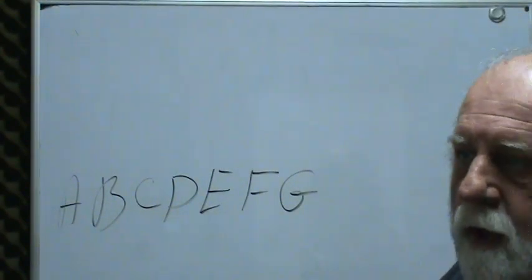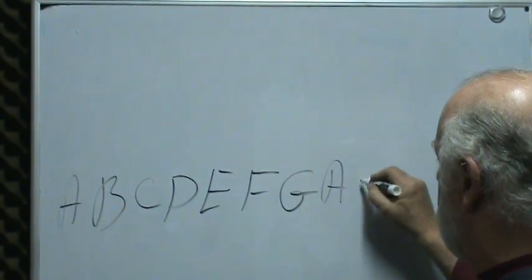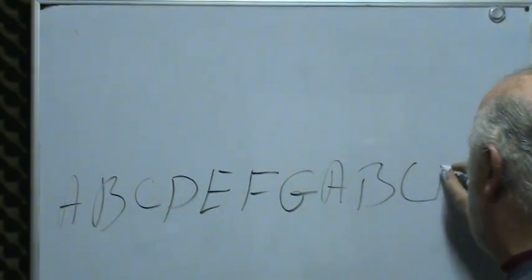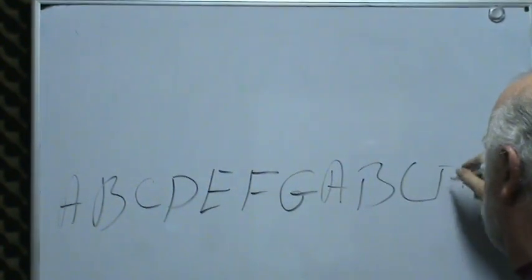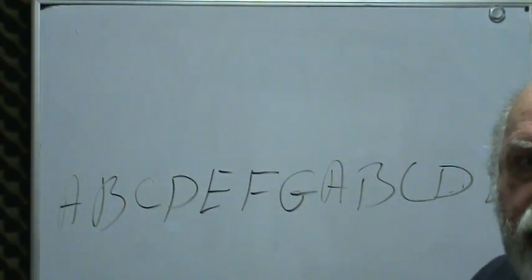The thing about the musical alphabet is it starts over: A, B, C, D, E, F, and it just keeps going like that.